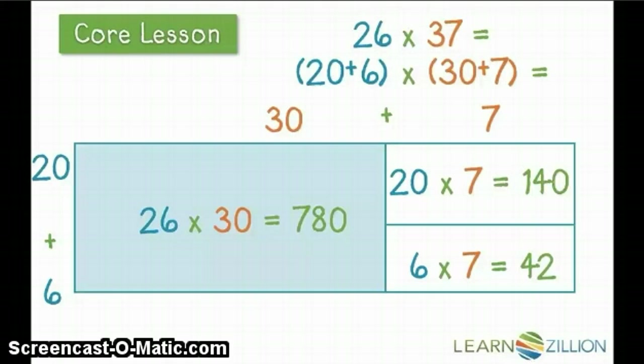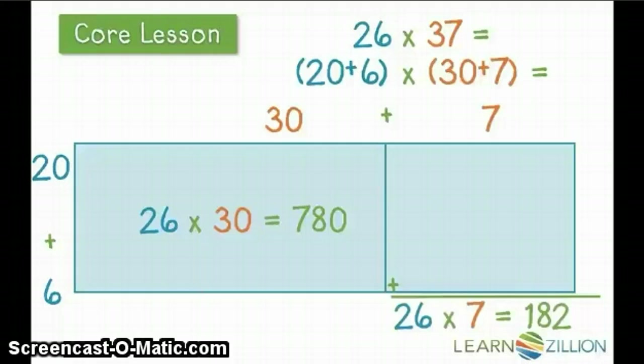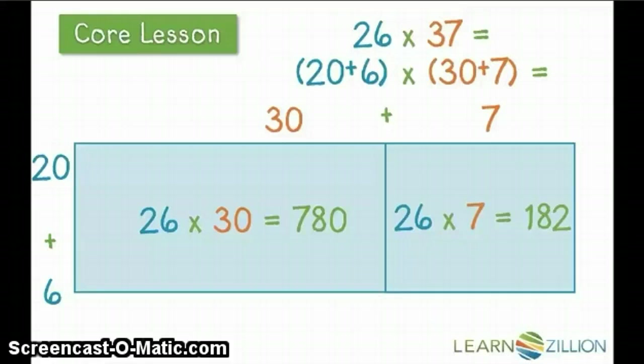Now I'm going to move over to the 7s column. I'm going to add 20 groups of 7, equaling 140, to 6 groups of 7, equaling 42, for a total of 26 groups of 7, or 182.